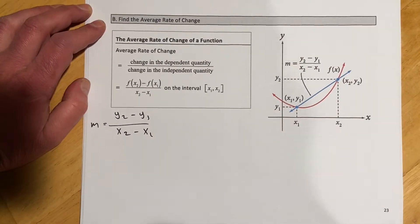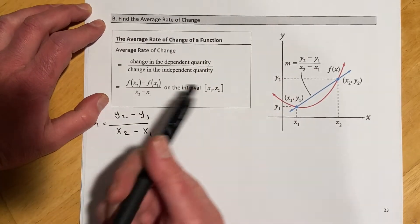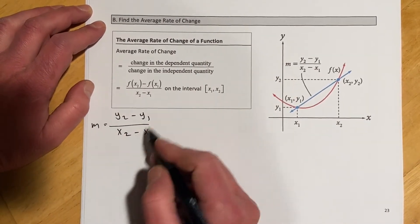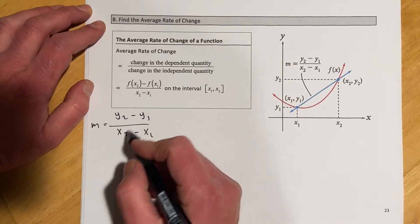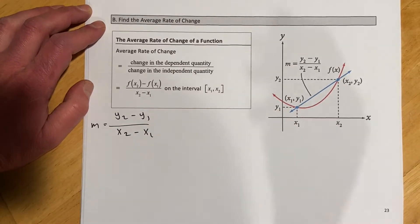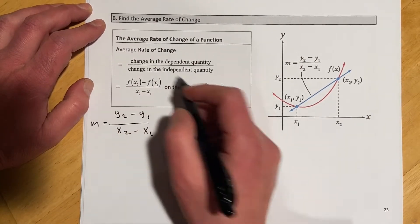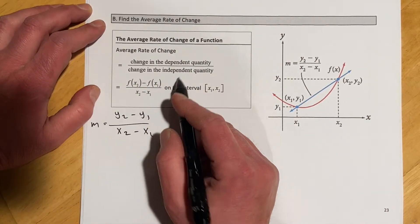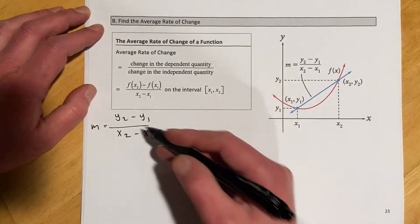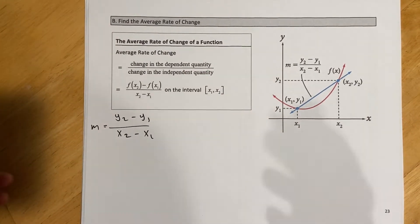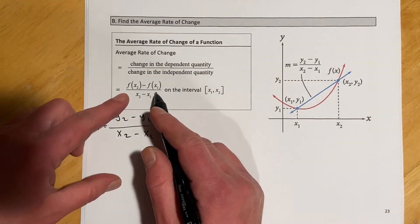Hey everyone, this is Derek. In this video we're going to look at average rate of change, and this time it's going to be in function notation rather than the more algebraic looking slope version. It's the same idea - still change in y over change in x, or change in the dependent quantity over the change in independent quantity. They're the exact same formula, just written a little bit different.